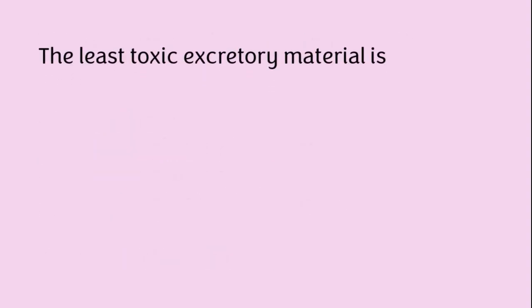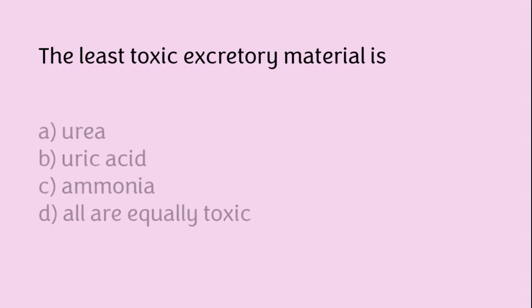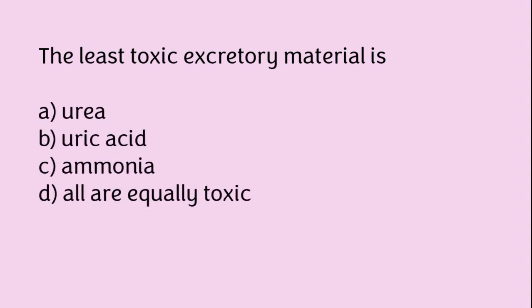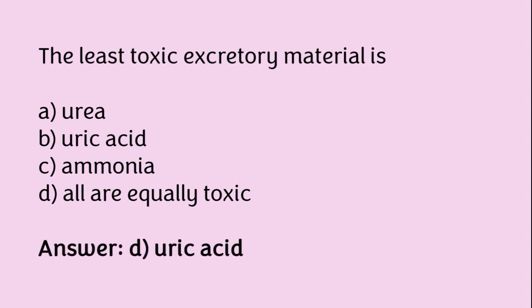The least toxic excretory material is: urea, uric acid, ammonia, or all are equally toxic? The correct answer is option D — the least toxic excretory material is uric acid.